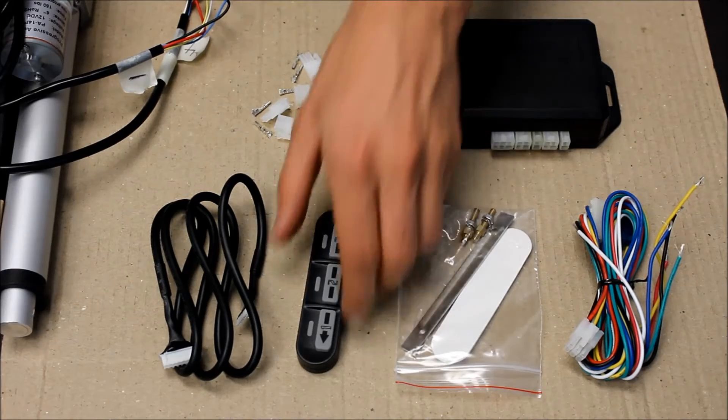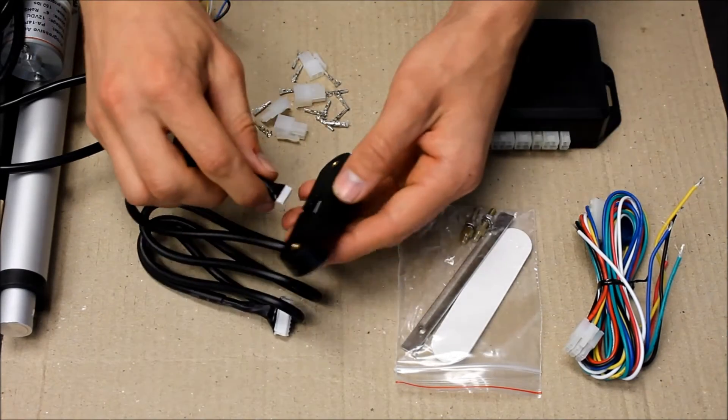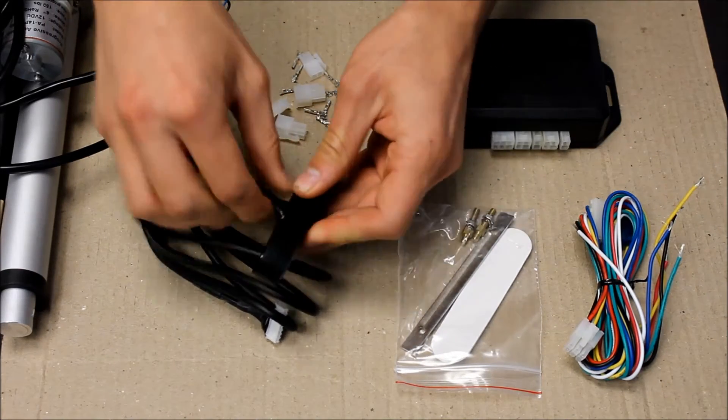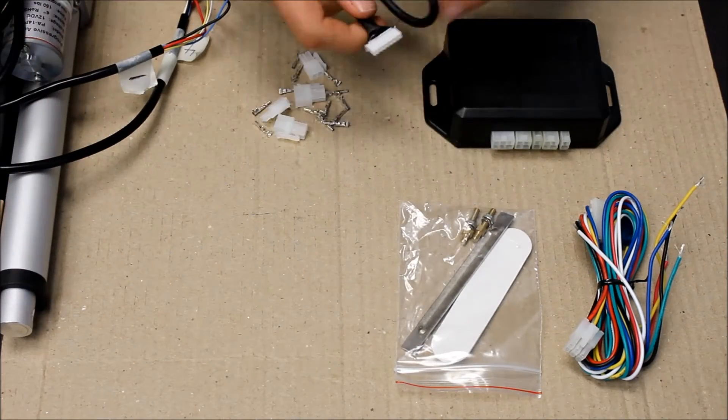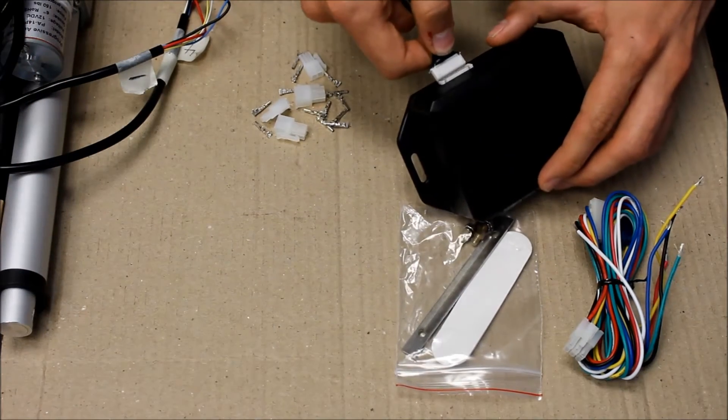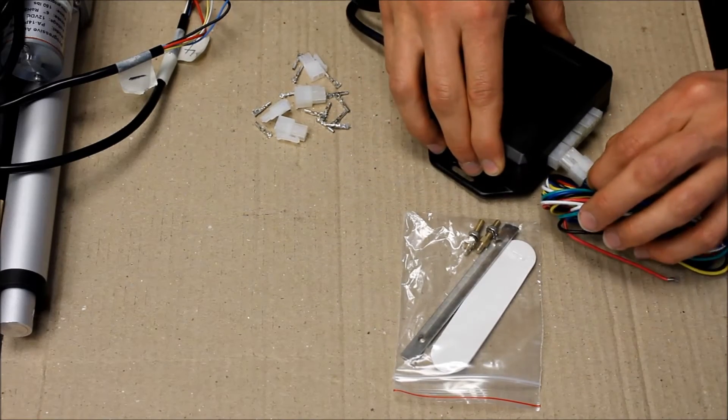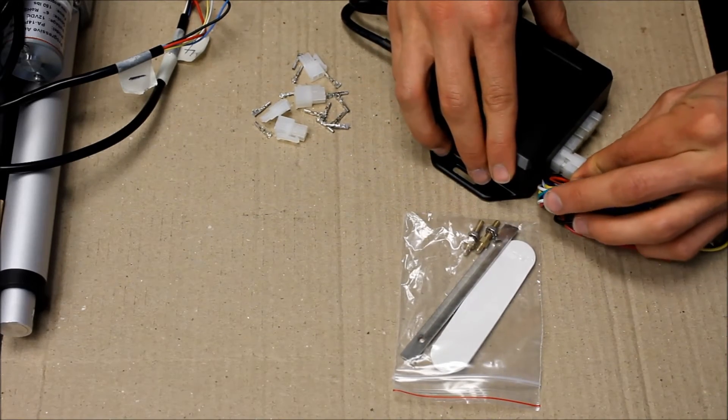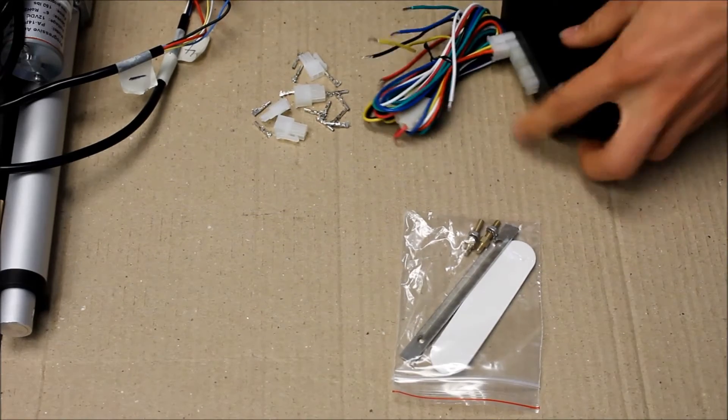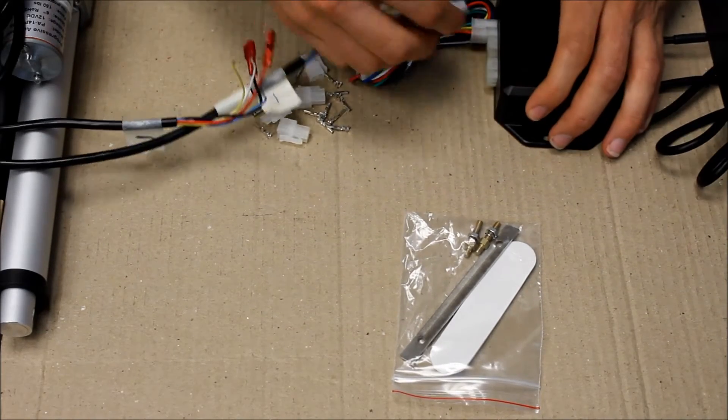To wire everything together, first we attach the control pad and then plug it into the back of the PA39. Then we can attach the wiring harness to the front and plug in the actuator.